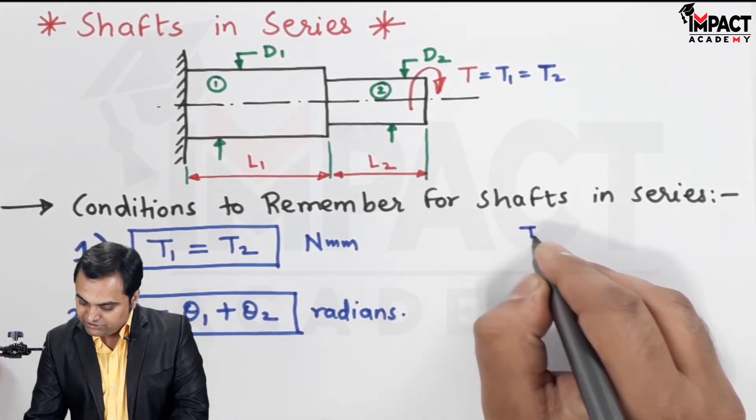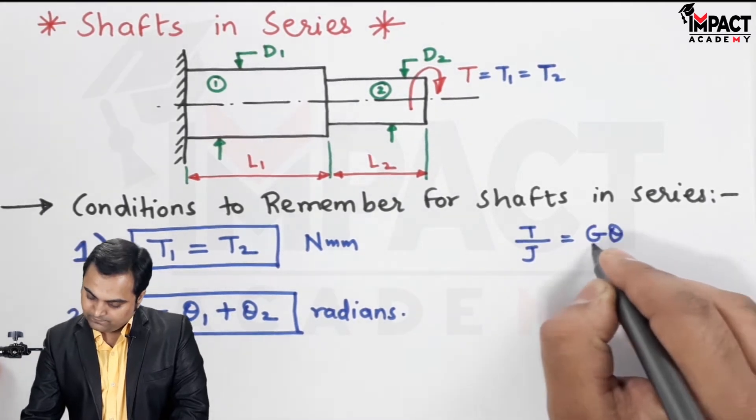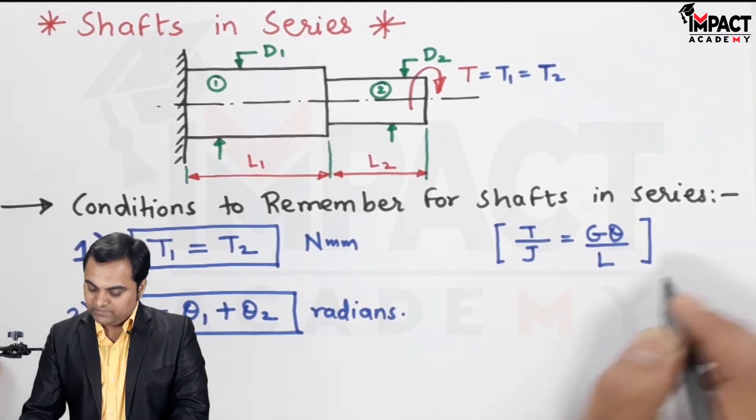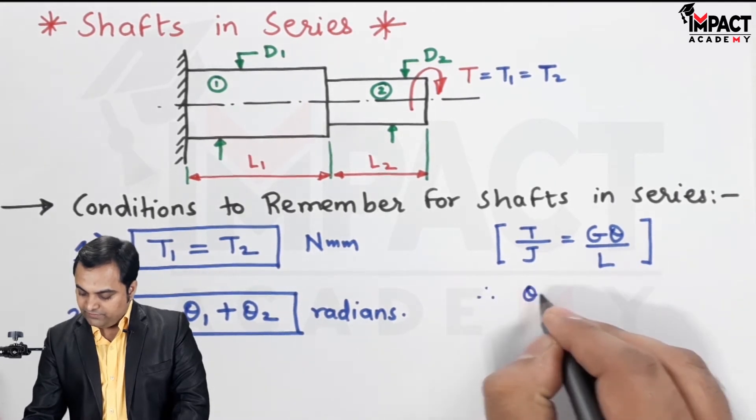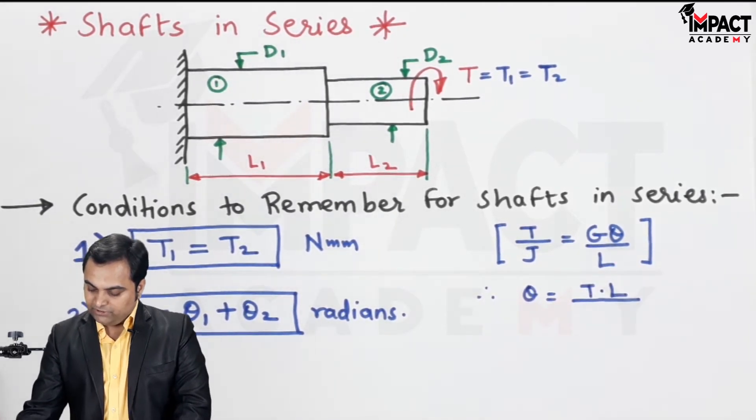That is, T/J is equal to G theta/L. So therefore, theta is equal to T times L upon G times J. So respectively we can put the values for theta 1 and theta 2.